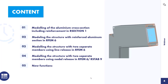Another option is to model two separate members in RFEM or R-STAB with the respective aluminum or steel cross-section. I will first show the modeling of the aluminum cross-section including reinforcement in R-Section, and afterwards create the structure in RFEM. I will also explain how to change R-Section cross-sections from RFEM, then model the structure with two separate members using line releases and nodal releases. Finally, I will talk about new useful features.